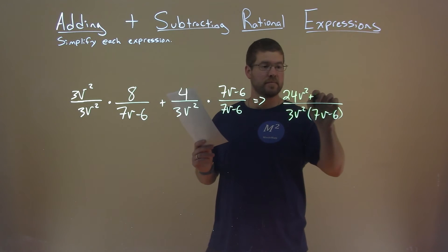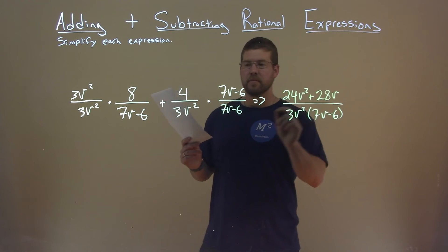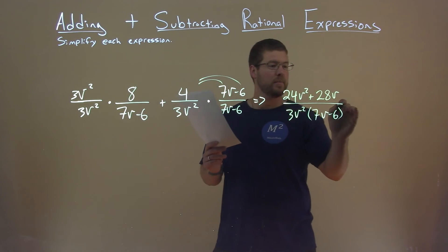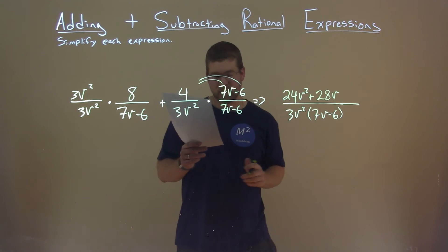Well, that's 28v. And then 4, make sure you distribute to both parts here. 4 times minus 6 is minus 24.